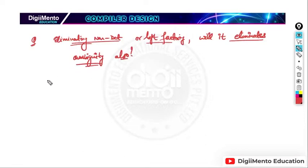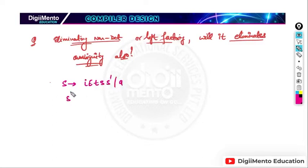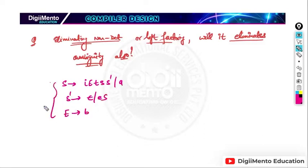As we converted the previous grammar into a deterministic grammar — with S-dash going to epsilon, a-S, and e driving b — that was the deterministic form we converted from non-deterministic. Now let's check whether this grammar is ambiguous or not.